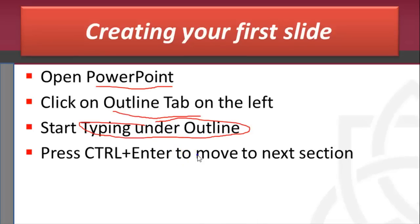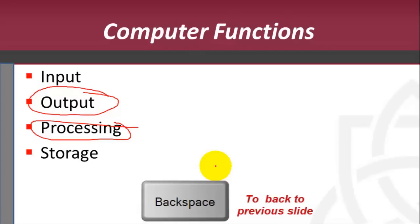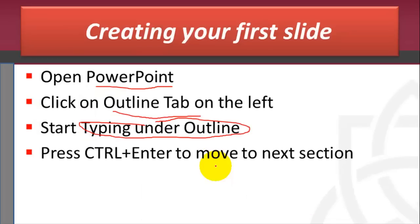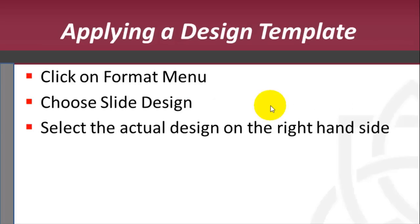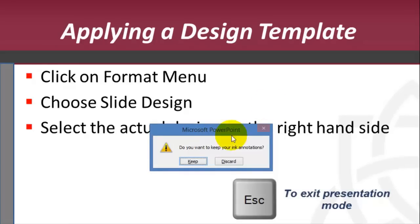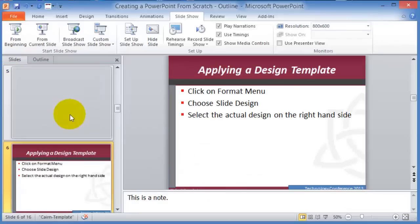To advance the presentation, press the spacebar, the right arrow, or click the mouse (as long as you're not in pen mode — use Ctrl+A for the arrow first). Once you're done presenting, press Escape to exit. If you want to keep any annotations you made, click Keep, and those will be embedded into your PowerPoint. Make a copy of the original first before annotating so you have a clean version.